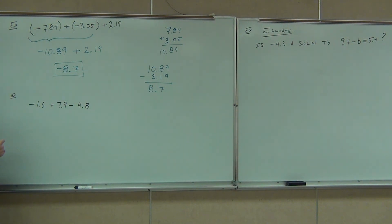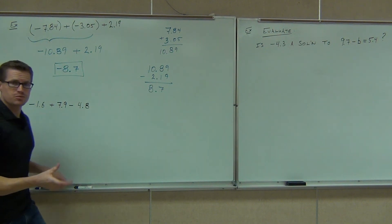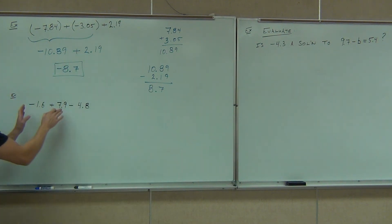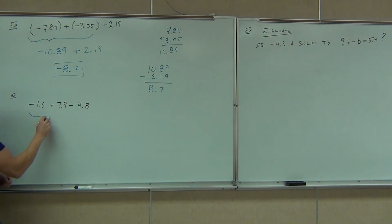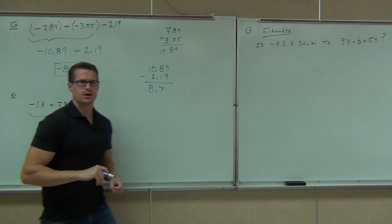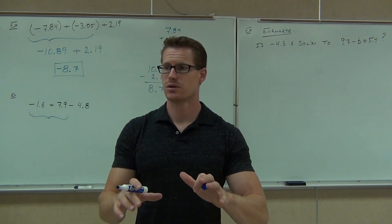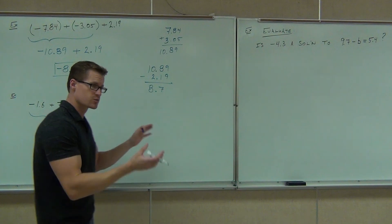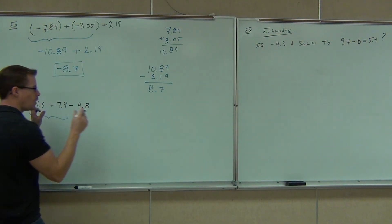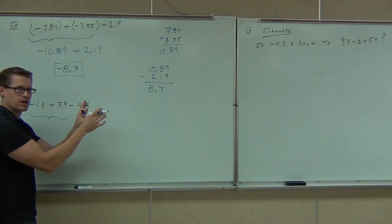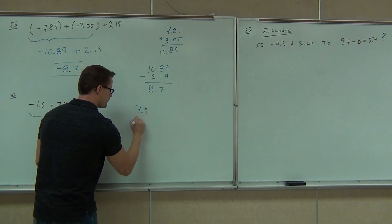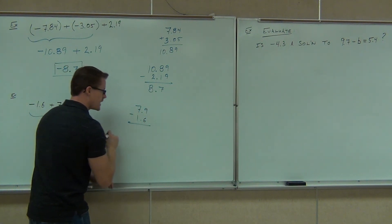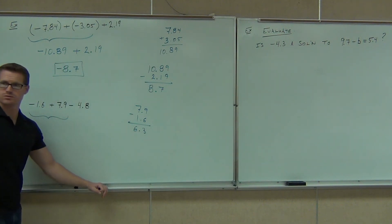For the last one, we're going to do this two by two from the left-hand side. So we'll look at the first two numbers and ignore this last decimal for just a bit — negative 1.6 plus 7.9. Are we going to add those or subtract those? Different signs. The addition rule says we subtract them. So we take 7.9 minus 1.6. If we subtract them, we'll get 6.3.